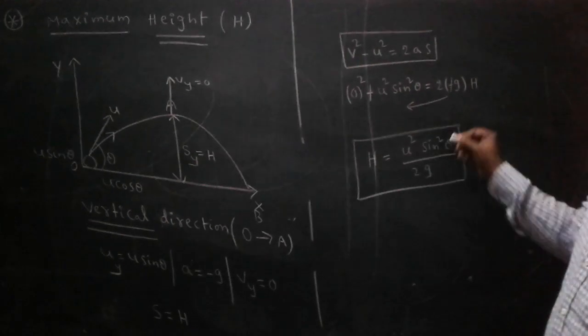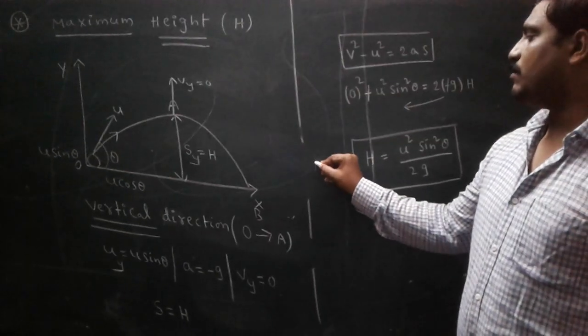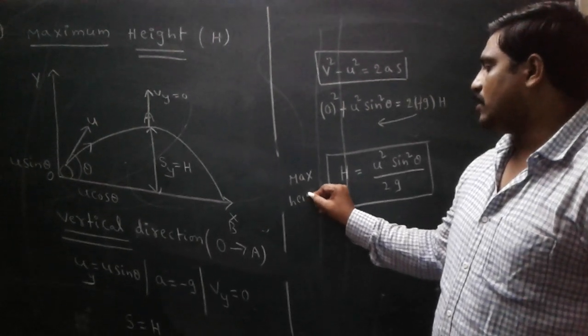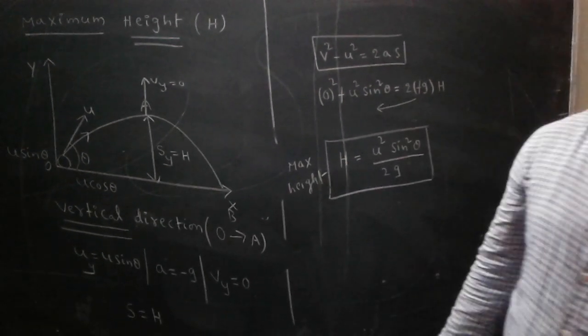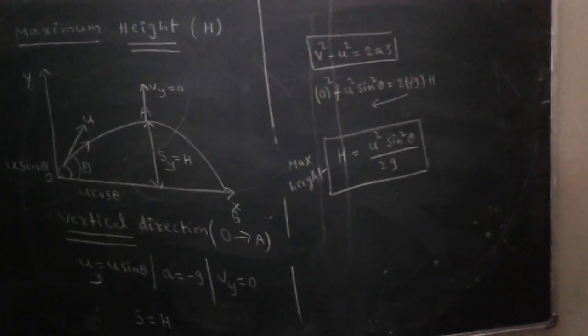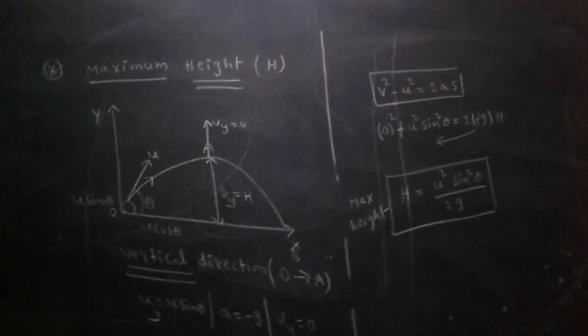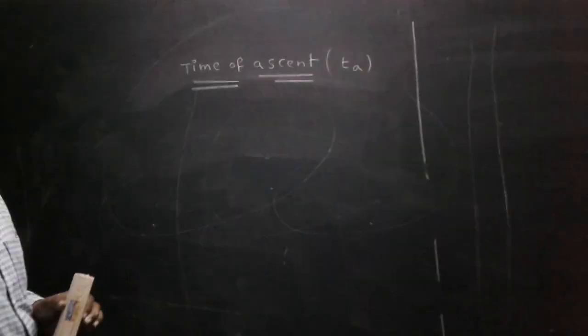This is the formula for maximum height in the case of projectile: H = U² sin² θ / 2g. This is the formula for maximum height in the case of projectile.